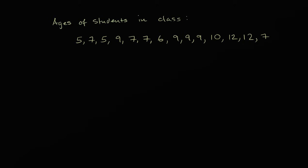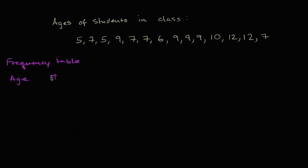The first way we can think about it is as a frequency table. What we're going to do is look at each possible age that we've measured here and see how many students in the class are of that age. So we have one column for age, and then the number of students of that age — or we could say the frequency.